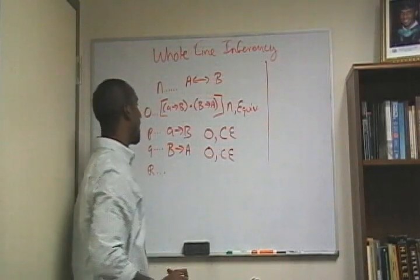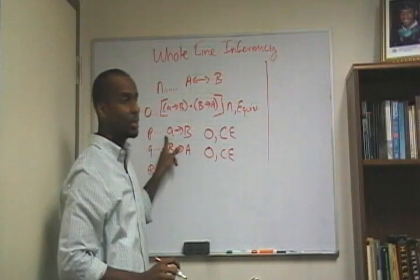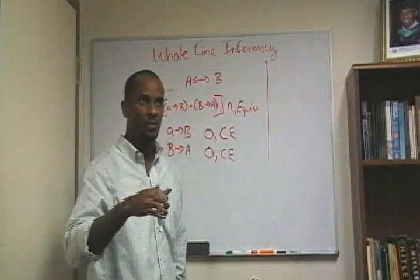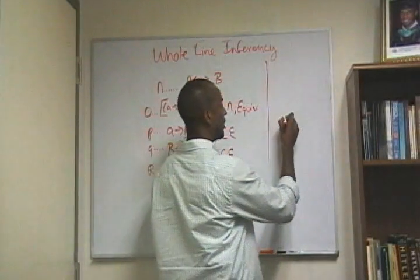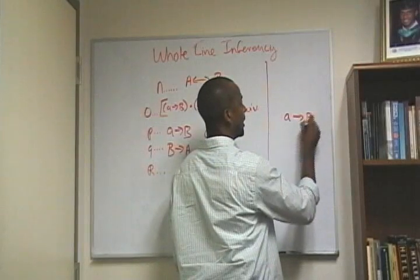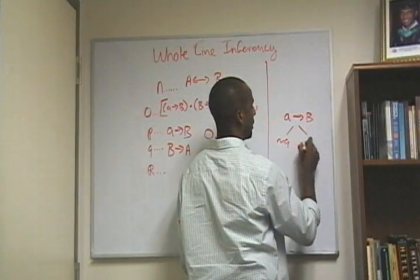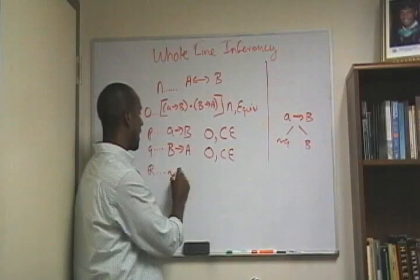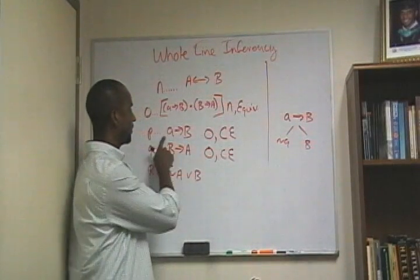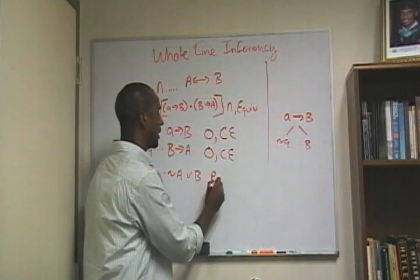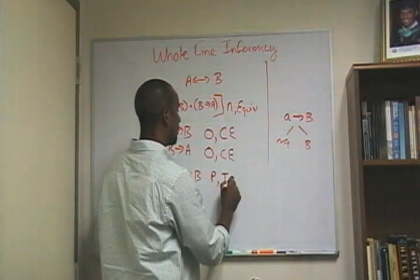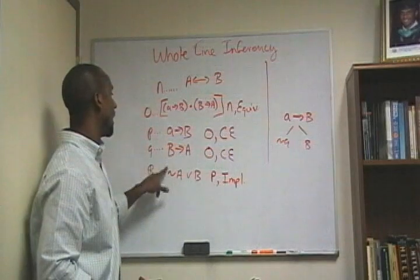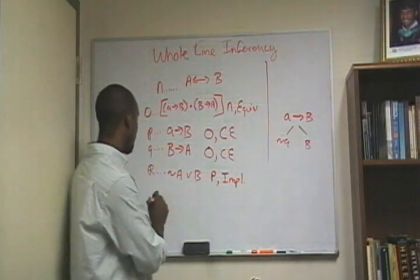At line R, I wanted to use material implication. What does material implication say? We got an idea of how this works from a few lectures ago in talking about truth trees. If I have if A, then B, I can then say not A or B. So from line P, I'm able to get not A or B — I use implication on P. I can also use material implication on Q as well if I wanted to.